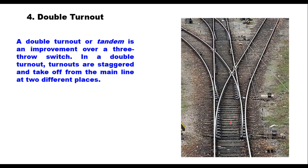In a double turnout, the heel of the two switches are at a certain distance from each other — one heel block for the first and another for the second — so the turnout takes off from the straight track at two different points. This arrangement is also called the following point crossing.